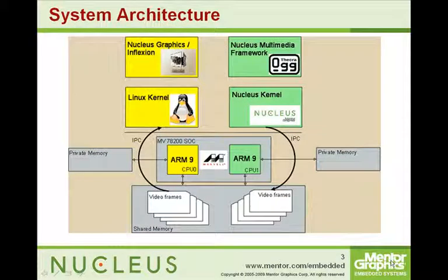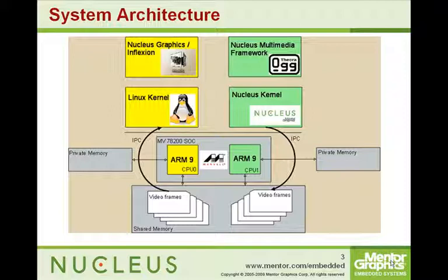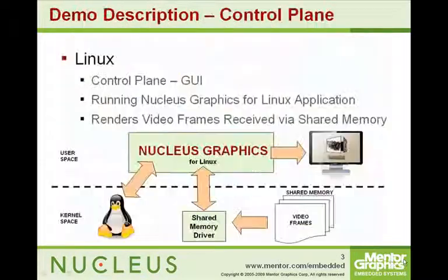This diagram shows the high-level system architecture of this AMP demonstration. As you can see, we have Nucleus Graphics and Linux running on one of the ARM 9 cores, and Nucleus Multimedia Framework and the Nucleus Real-Time Kernel running on the other ARM 9 core. This is a typical AMP design with the control plane running Linux and the data plane running Nucleus.